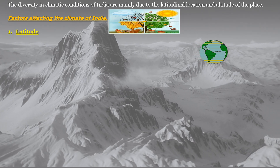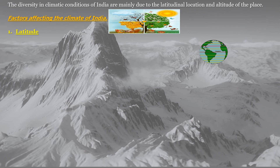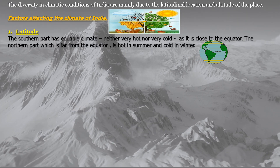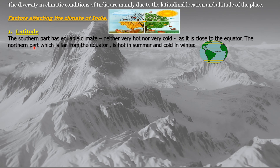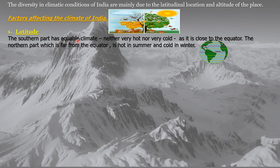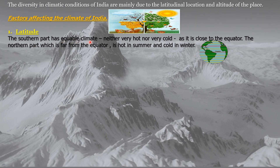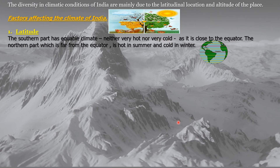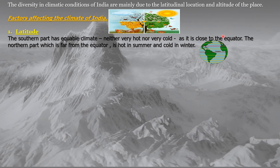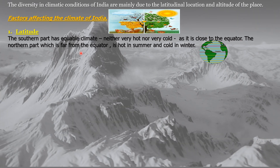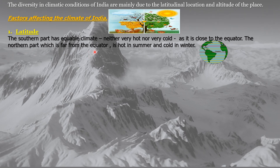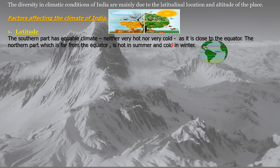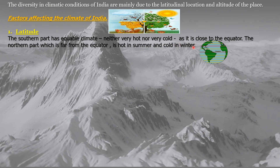The first factor that affects the climate of India is latitude. The southern part has an equable climate — neither very hot nor very cold — because it is close to the equator. The northern part, which is far away from the equator, is hot in summer and cold in winter.